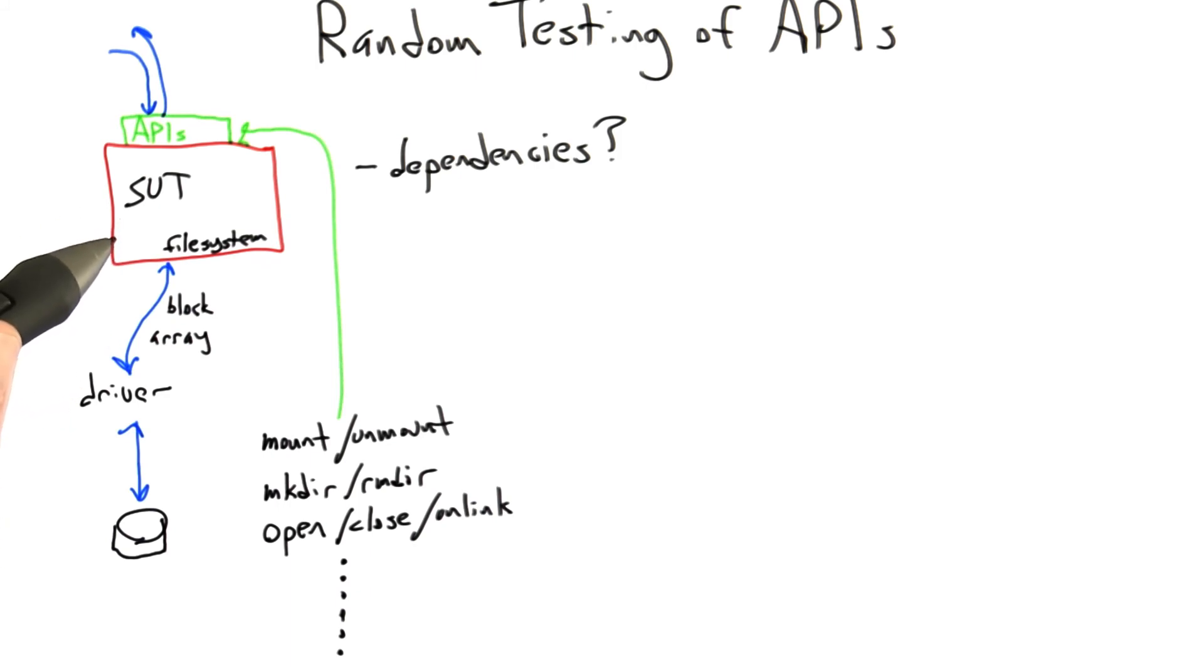Before we get into the details, let's think about why we might want to do random testing of a file system. First of all, file systems are fairly long and complicated. I looked at the size of five file systems commonly used on Linux, and they're all between 15,000 and about 70,000 lines of code. File systems end up being substantially large chunks of code. What's more, the integrity of our data depends on the correctness of that file system code.